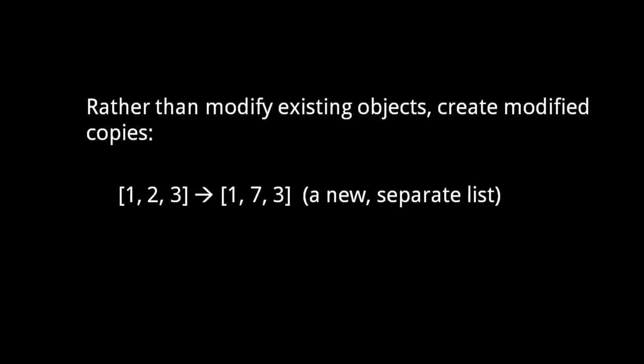For example, if you have the list 1, 2, 3, and want to modify the second element to be the value 7, we needn't modify the existing list, but instead can create a copy that has the modification. So we end up with a new list 1, 7, 3. We still have the original, unchanged list, but now we also have a new separate list. By making modified copies in this manner, we can avoid ever mutating any objects.